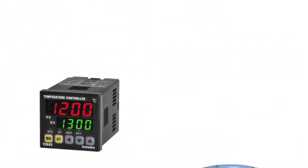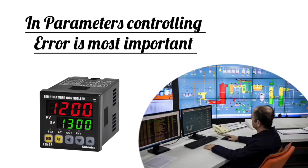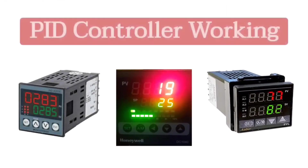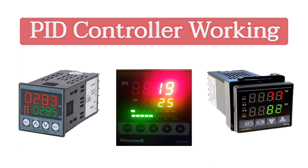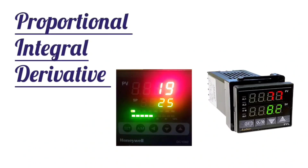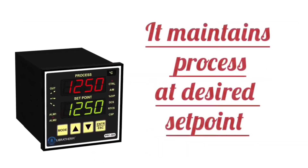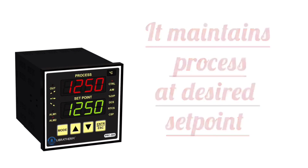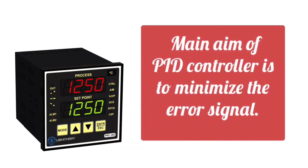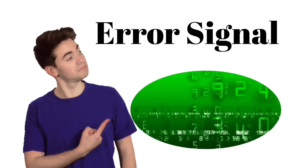Like pressure, level, temperature, pH, flow, RPM, and other parameters. In this parameter controlling, the error is the most important. Let's understand this. To understand the error signal, you must understand the working of the PID controller.